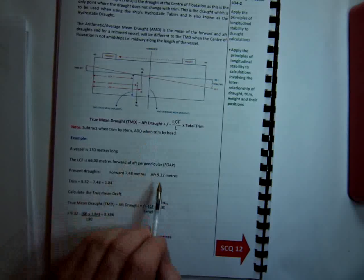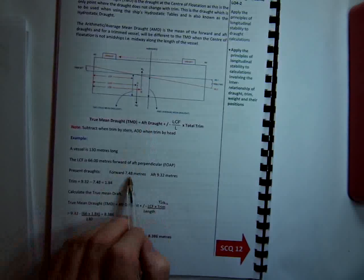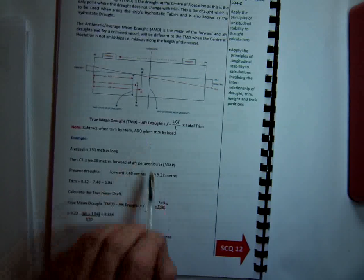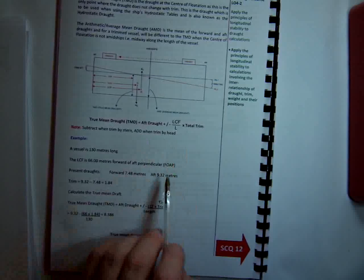So the easiest way to approach this is when you look at the formula, look at your two drafts. If you were trimmed by the head, then you would add it. And here we're trimmed by the stern, which you usually are, of course, you'll subtract it.